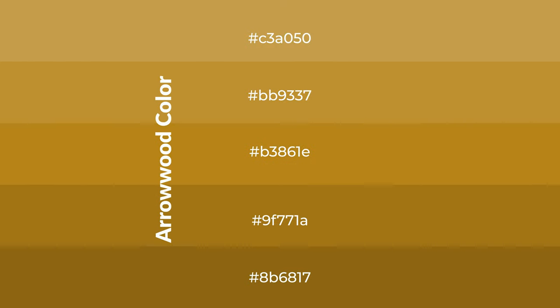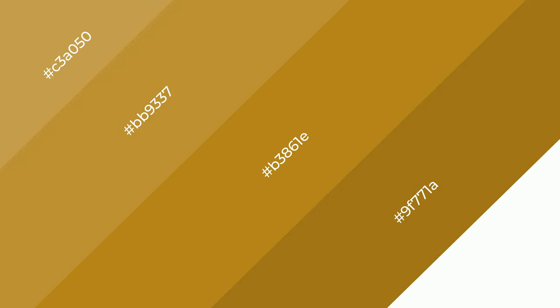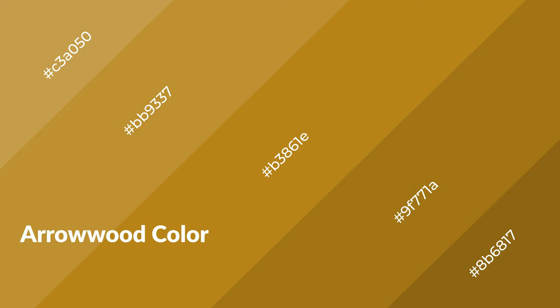To generate shades of a color, we add black to the color. Shades are used in patterns and 3D effects. Layers and shades create depth and drama. Arrowwood is a warm color and it emits cozier and active emotions.